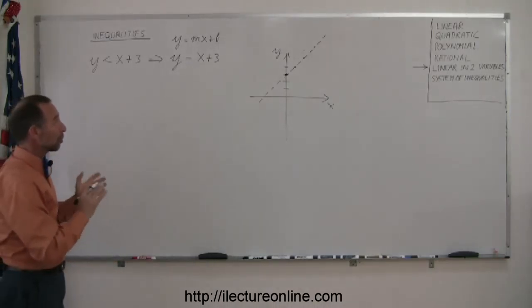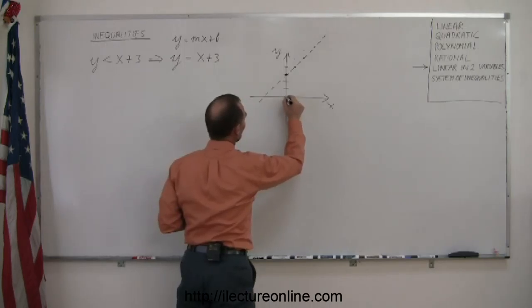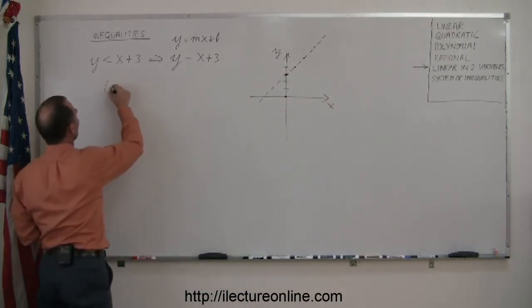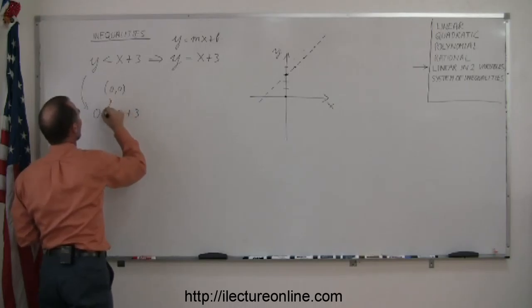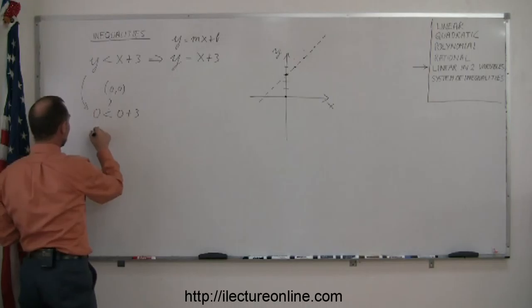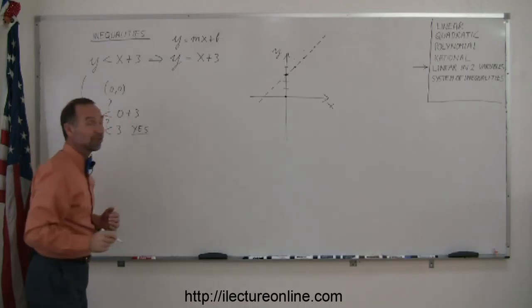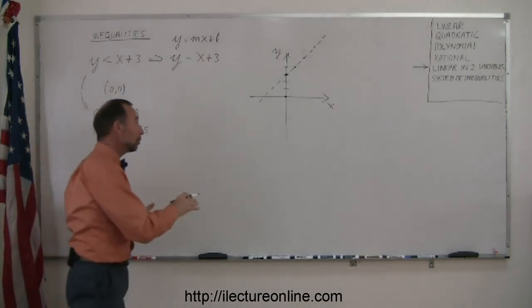So now to find out which of the two regions does satisfy the inequality, we're going to take a test point, and (0, 0) is always a preferred test point. So we try the point (0, 0) for x and y. When we plug that in, we get 0 less than 0 plus 3, question mark. Is that a true statement? While simplifying it, you can see that 0 less than 3 is indeed a true statement. So you say yes, that's true, which means that the point that I picked is part of the solution. It's part of the region that satisfies the inequality.